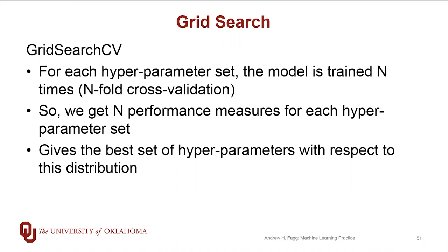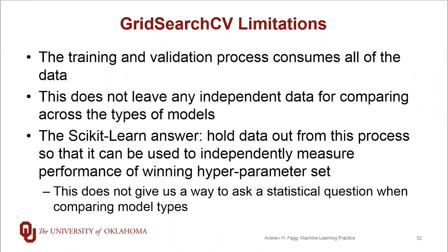GridSearchCV does have its limitations. In particular the problem is that the training and validation process consumes all of the data that you hand to it. And what this means is that this does not leave us with any independent data for comparing across model types. The scikit-learn answer to this is to take our dataset, hold out a piece for doing testing, put it away, and then only give the remaining piece to GridSearchCV to do its job.